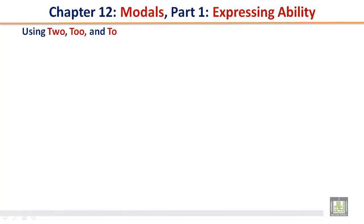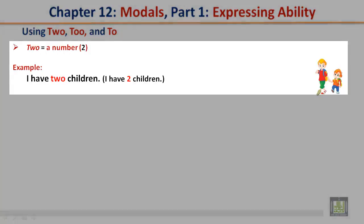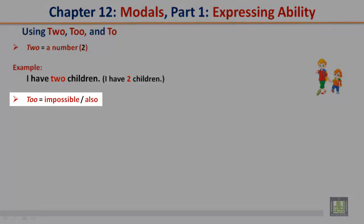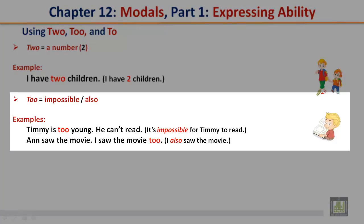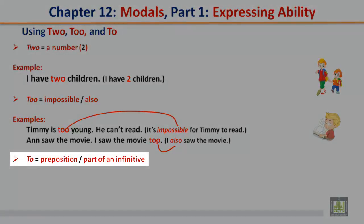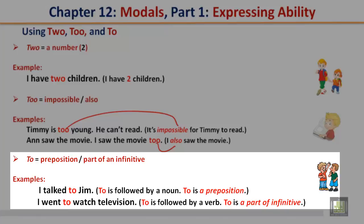Using to, too, and two. Two equals a number: I have two children. Too equals impossible or also: Timmy is too young — he can't read; too means impossible here. Anne saw the movie; I saw the movie too — too means also here. To (T-O) equals a preposition or part of an infinitive. I talked to Jim — to is followed by a noun, so it is a preposition. I went to watch television — to is followed by a verb, so it is part of an infinitive.